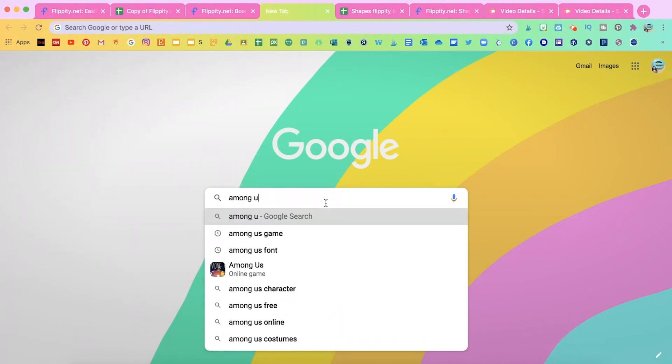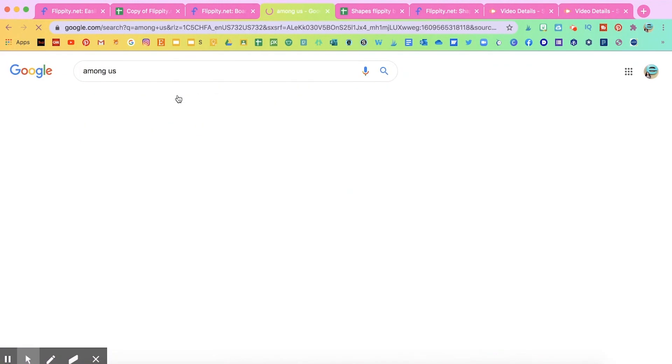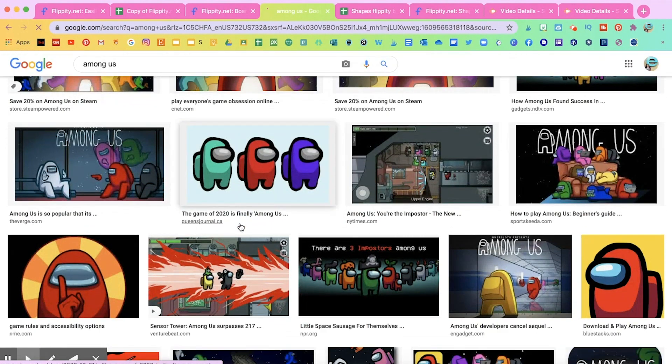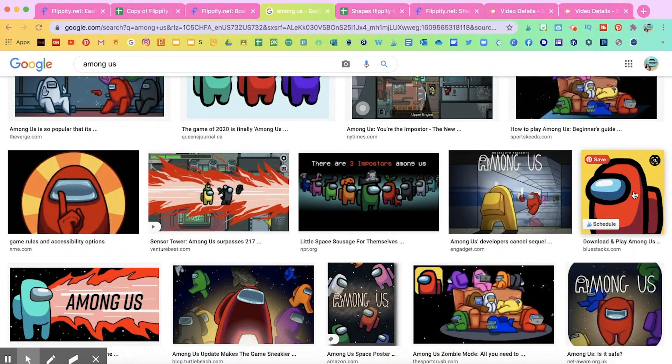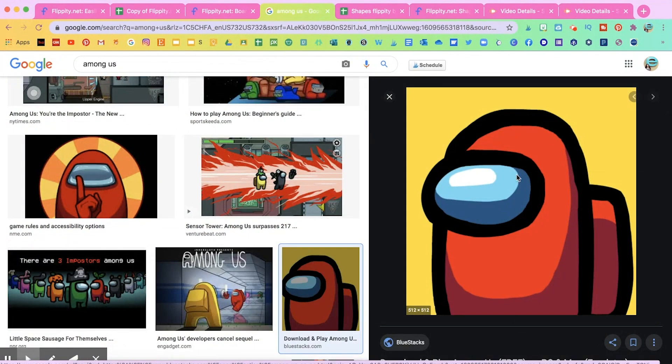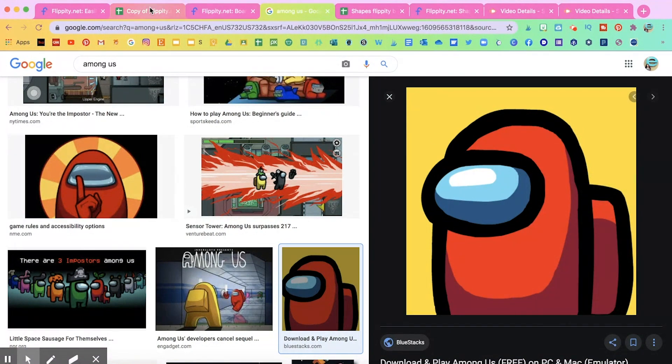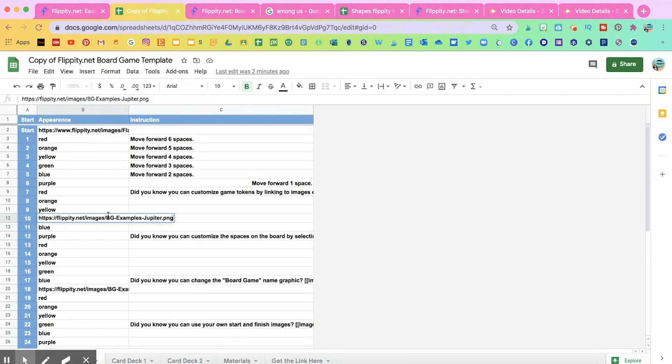For example, they're crazy about Among Us. And so I'm going to go to images and I'm going to choose an image that I know they'll love. For example, this one right here. And then I'm going to right click it and click down where it says copy image address. Then I'm going to go back to my spreadsheet.